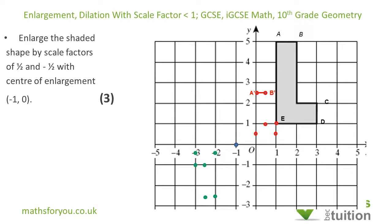Similarly for C — starting from the center of enlargement, I move 4 to the right and 2 up. Because the scale factor is one half, I move 2 to the right and 1 up. So C prime is there.